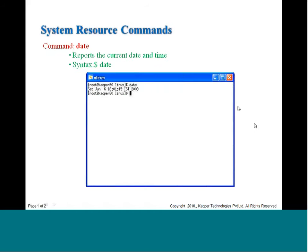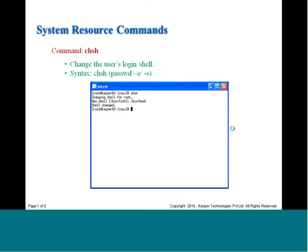Now let us look at some more system resource commands. The first is the date command. When you type date, it tells you the current day, date, time, and time zone. This is useful in programs — you issue a date command at the start of a program and another at the end, then compare the two to find out how long the program took to run.